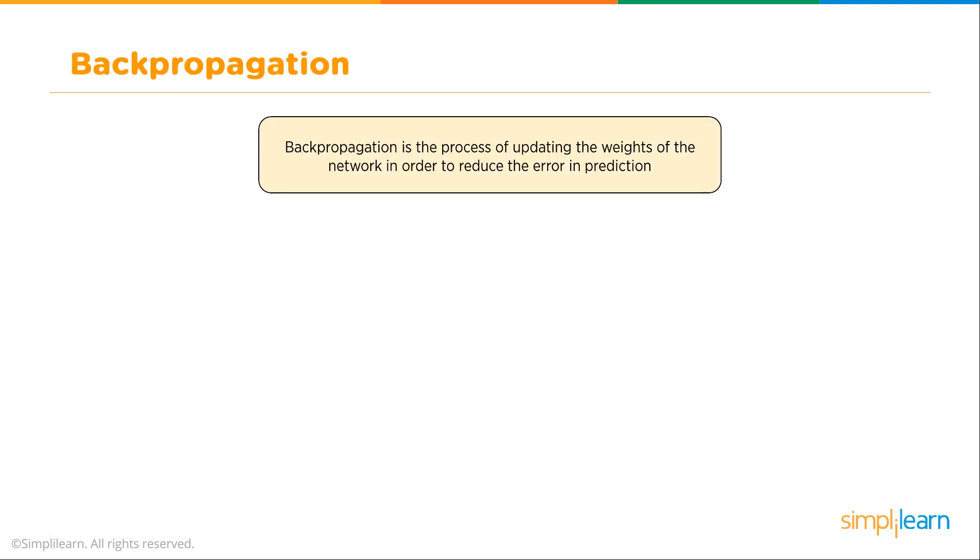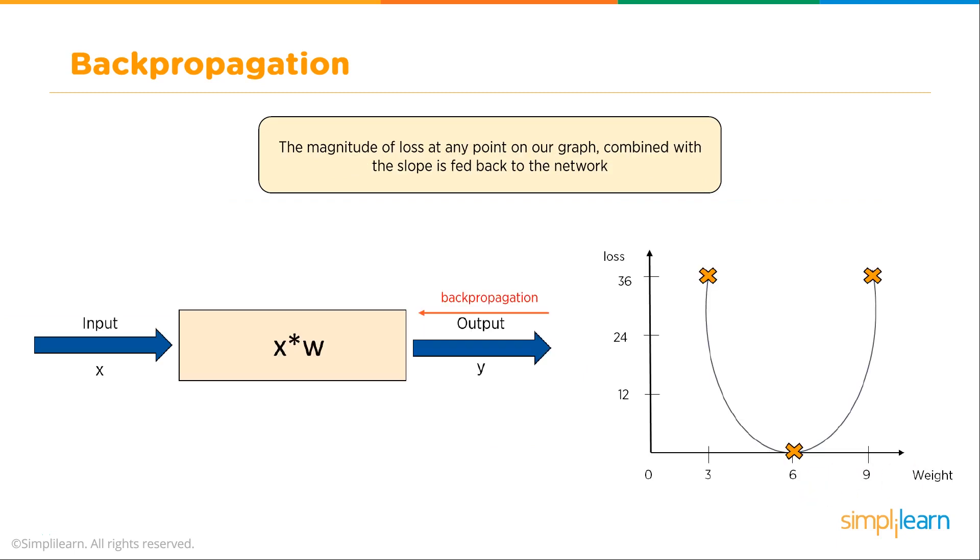So we're talking about gradient descent. That's finding the bottom of that curve even if it doesn't go all the way to zero. How do we apply that to our neural network? We use back propagation. Back propagation is a process of updating weights of the network in order to reduce the error in prediction. The magnitude of loss at any point on our graph combined with the slope is fed back to the network.